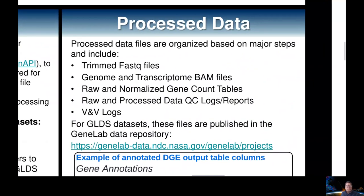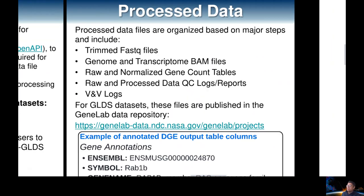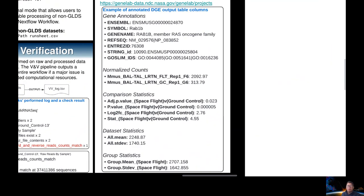Process data for the overall workflow is organized and published for everything on GeneLab processed through this workflow. These files are available for downstream research applications, from the trimmed FASTQ files through all of the alignment steps, all the way to the final output table from the DGE and gene annotation. I want to showcase in particular an example of the kind of information found in that final annotated DGE output table.